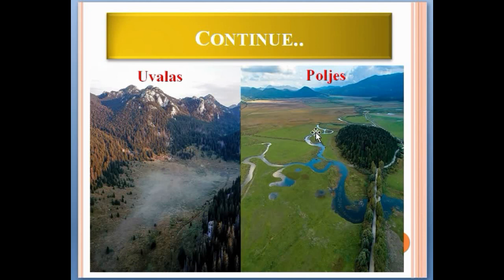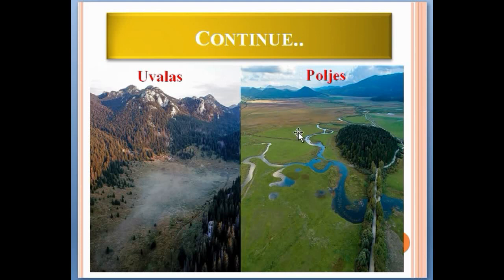Poljes are large, more or less closed depressions with steep sides and flat alluvial floors, frequently dotted with conical residual hills. As you can see, these are the conical residuals in a large area dotted with some surface features.